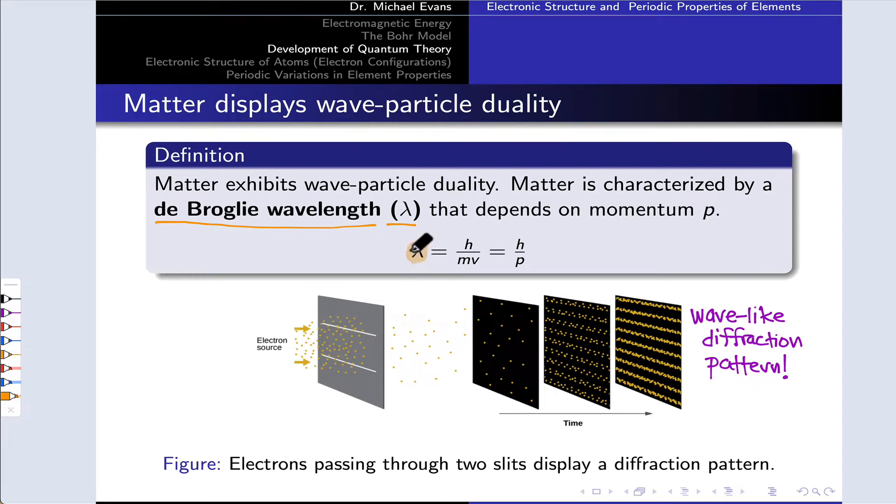It's a wavelength in the same sense that the wavelength of light is a wavelength. He proposed that is equal to Planck's constant divided by the momentum of the particle, which is the product of its mass and its velocity, and we represent that momentum sometimes with the letter p.